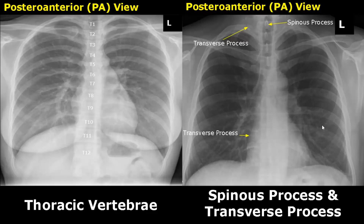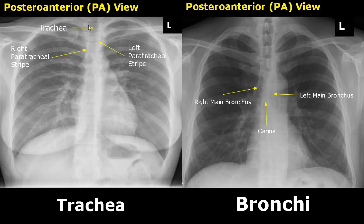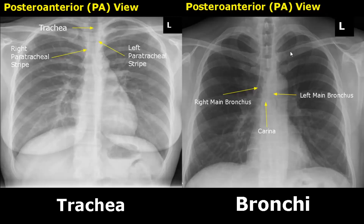The trachea appears as a radiolucent or dark tube-shaped structure because it contains air. It has bright walls which can be very well distinguished. The right tracheal wall is called the right paratracheal stripe and the left tracheal wall is the left paratracheal stripe. Both these stripes are radiopaque.